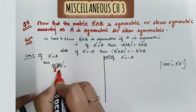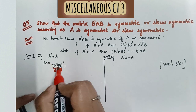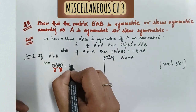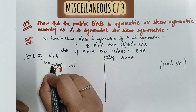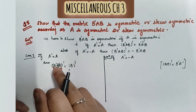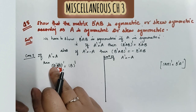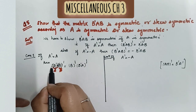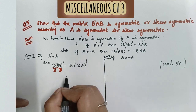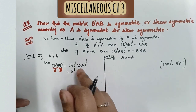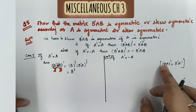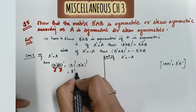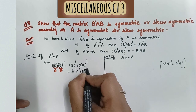We consider B'A as a single matrix and B as the second part. So (B'AB) transpose becomes B transpose times (B'A) transpose. Opening further using the result that (AB) transpose equals B transpose A transpose — reversing the order — we get A transpose and then B transpose whole transpose.